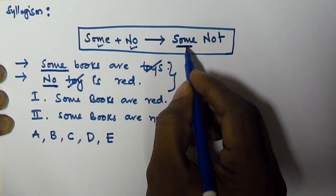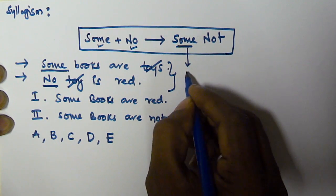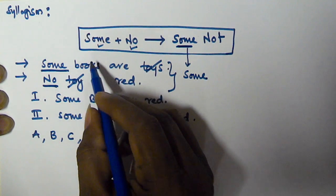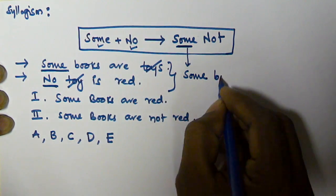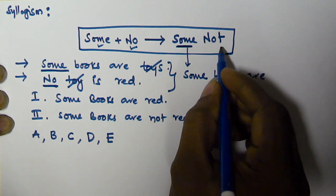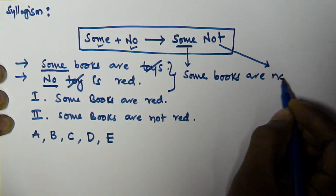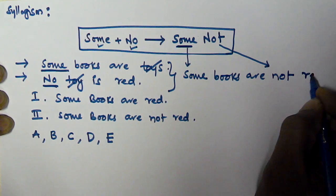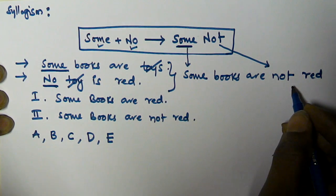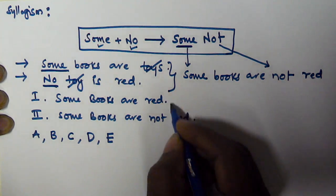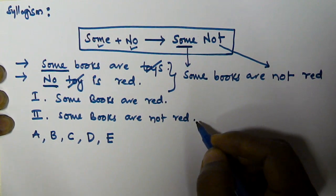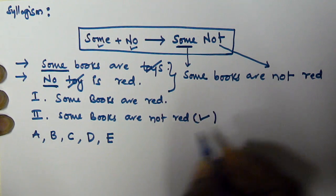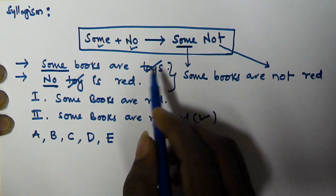First we take 'some,' then we take the subject from the first syllogism, which is 'books.' So we have 'some books are not,' and then we take the predicate from the second statement, which is 'red.' So the conclusion is: 'Some books are not red.' This matches the given conclusion two, so conclusion two is true.